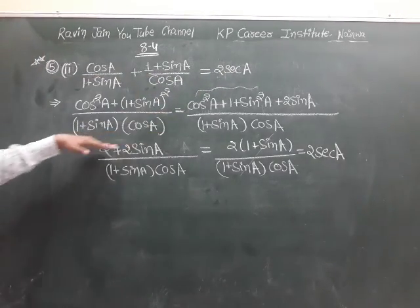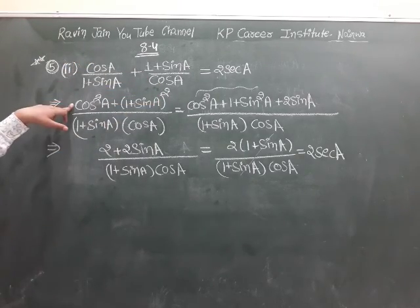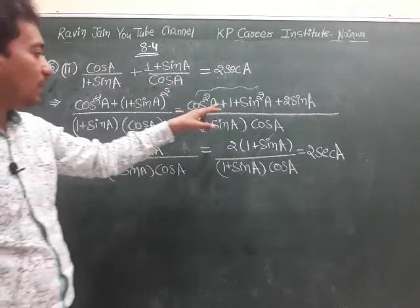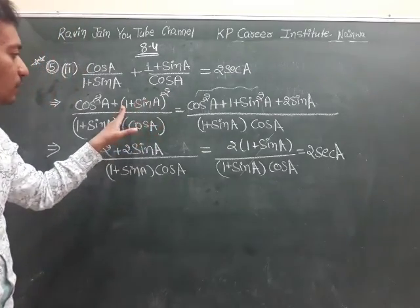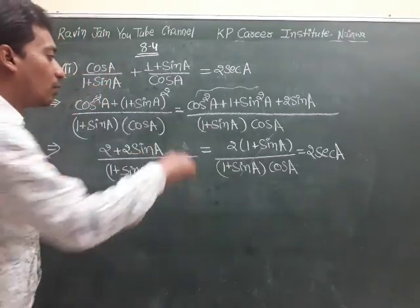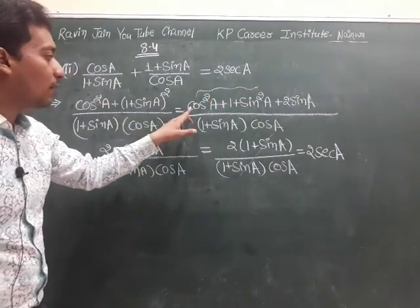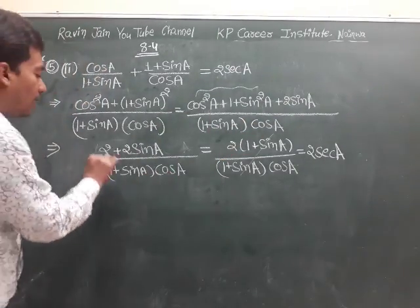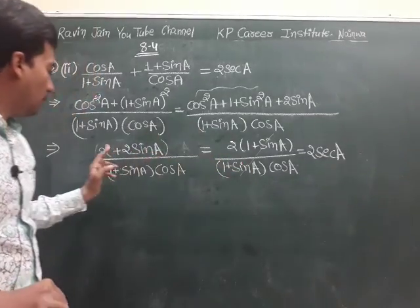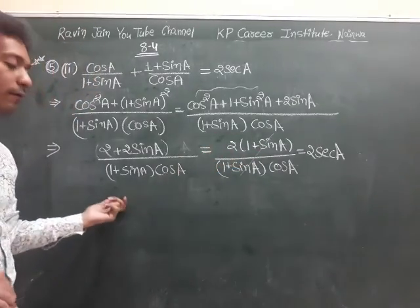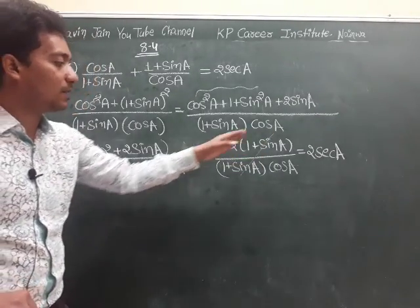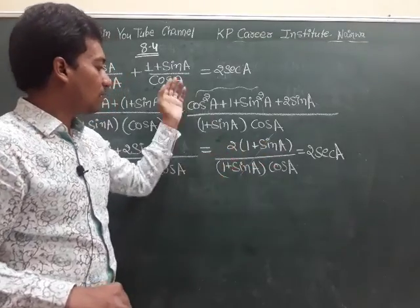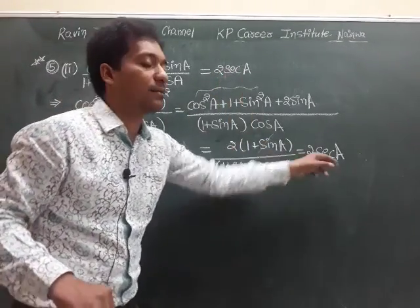Taking (1 + sin A)·cos A as LCM, the first term gives cos A·cos A = cos²A, and the second term gives (1 + sin A)(1 + sin A) = (1 + sin A)². Expanding using (a + b)² = a² + 2ab + b², we get 1 + sin²A + 2 sin A. Since cos²A + sin²A = 1, we have 1 + 1 + 2 sin A = 2 + 2 sin A. Taking 2 as common gives 2(1 + sin A) / [(1 + sin A)·cos A]. The (1 + sin A) cancels, leaving 2/cos A = 2 sec A, which is RHS.